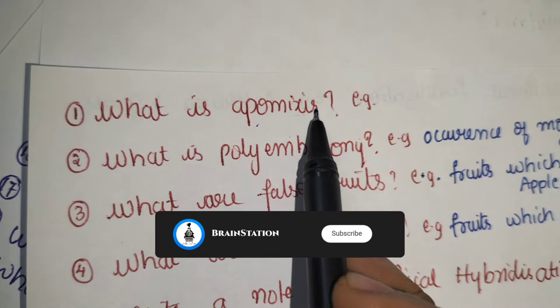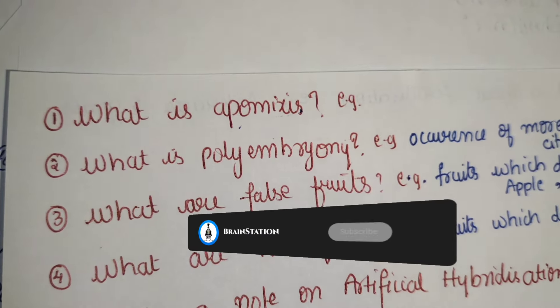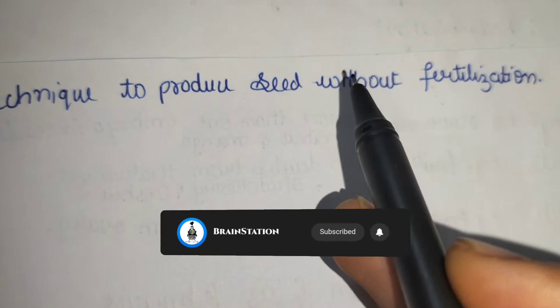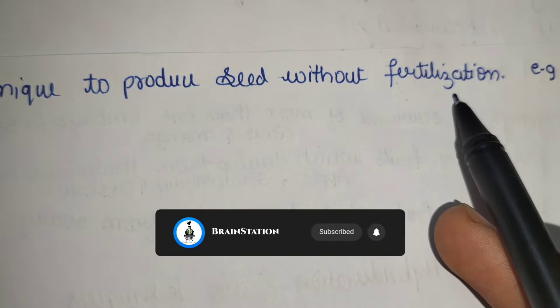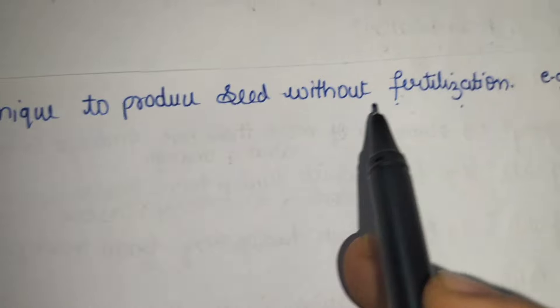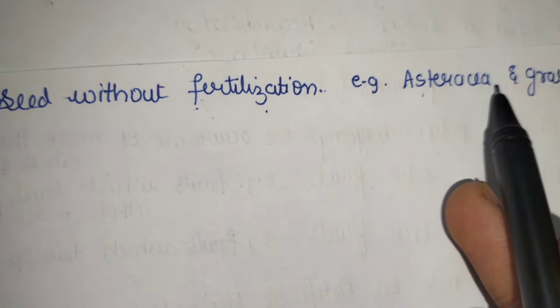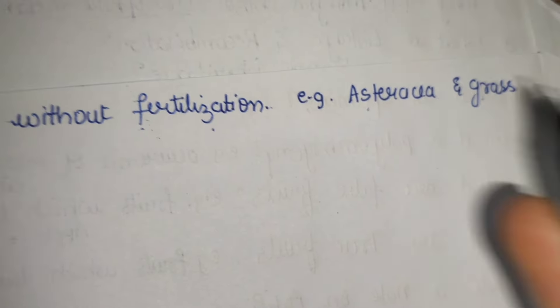What is apomixis? Technique to produce seed without fertilization is called apomixis. An example is Asteraceae and grass.